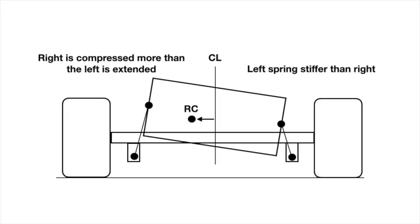Now let's look at this last slide. If the left spring is stiffer than the right rear spring — say you have a 250 on the left and a 200 on the right — that would move the elastic roll center towards the left side of the car. It would pivot off that roll center and the right would get smashed. If you have an extension of an inch and a half on the left side but three inches of compression on the right, the roll center has moved left and the right is compressed more than the left is extended.